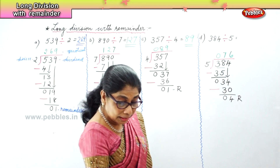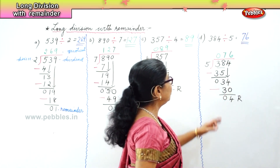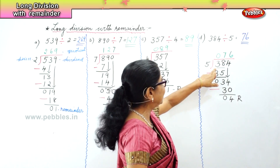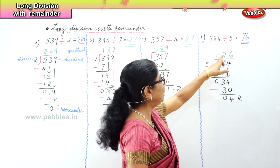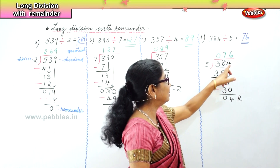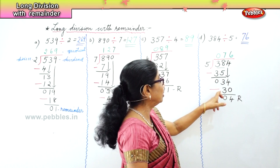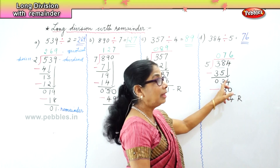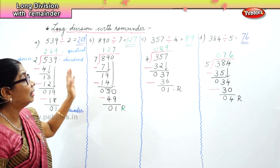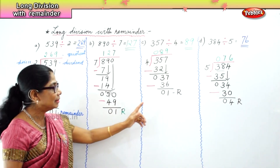The answer is 76 remainder 4. So we did long division with remainder. Remember: the divisor, the dividend, the quotient, and the remainder. For every sum here there is a remainder.